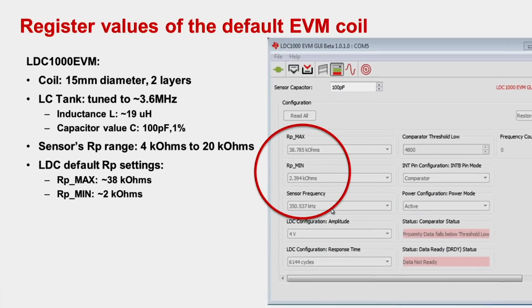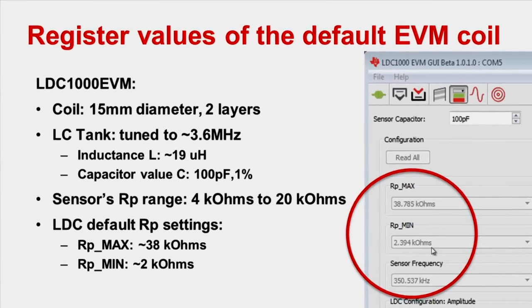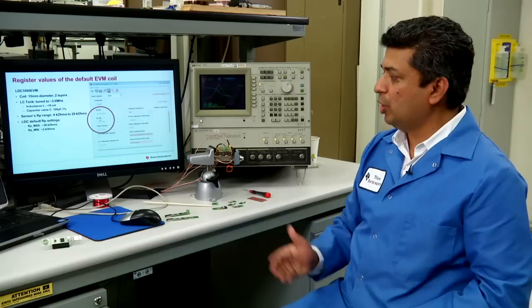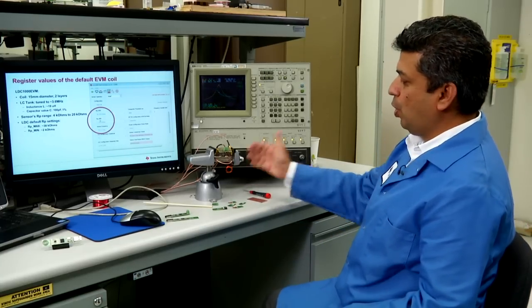The default EVM coil has got an RP range of 4 kilo ohms to 20 kilo ohms. If we change to this discrete coil, what is the range of RP does this coil have? The reason we need this range is that LDC1000 RP max register will have to be set above the maximum RP and the LDC1000 RP min register will have to be set below the minimum RP. So how do we measure RP of this coil?